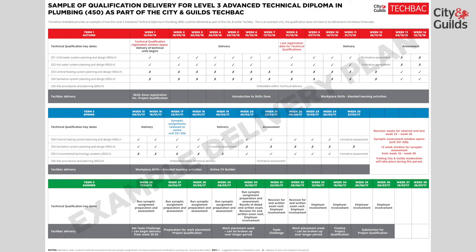Looking at the Sample Curriculum Plan, you'll see three terms shown in red, blue and green. The purpose of this Sample Academic Planner is to highlight the key dates that you will need to prepare your learners for their final assessments, ensuring that your delivery model fully prepares the learners for the practical end-synoptic assessment and knowledge test.